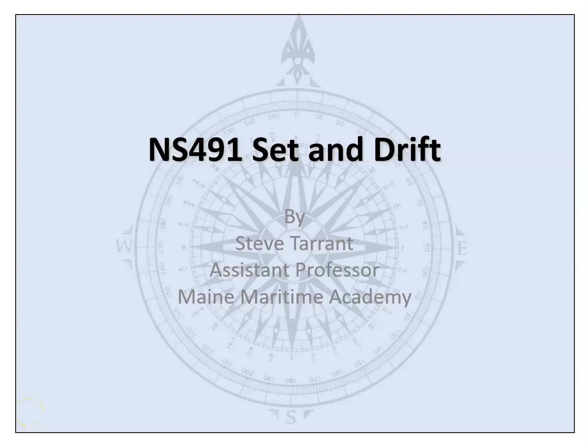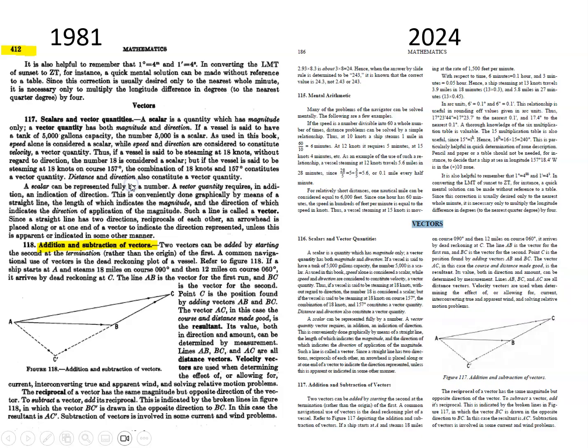All right, so set and drift. In 1981 there's a section on page 412, and in 2024 there's a section on page 185, but it's on vectors. That's also in the current book - there's a section on vectors in the current book as well. So that's that tip-to-tail stuff.